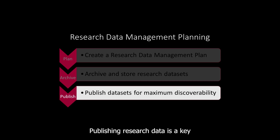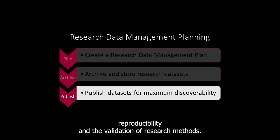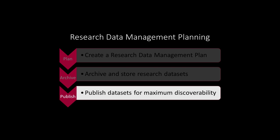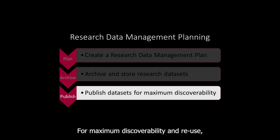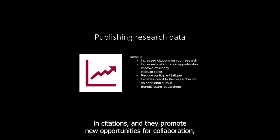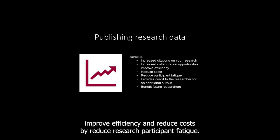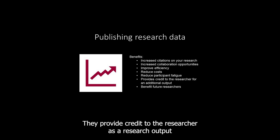Publishing research data is a key step in the scholarly publishing process because it promotes transparency, reproducibility, and the validation of research methods. Research data are primary research outputs that can be openly published via Research Direct to Research Data Australia for maximum discoverability and reuse. Publicly available data records are associated with an increase in citations and they promote new opportunities for collaboration, improve efficiency and reduce costs, reduce research participant fatigue, provide credit to the researcher as a research output in its own right, and benefit the researchers of the future.